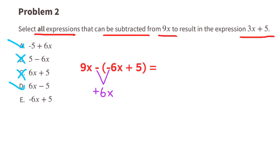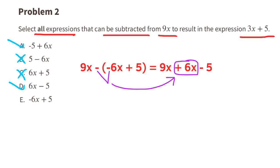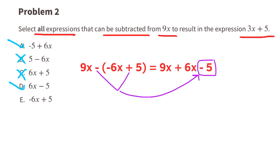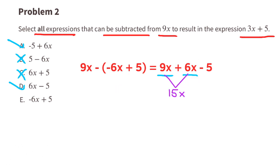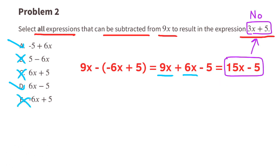Option E: a negative times a negative equals a positive, and a negative times a positive equals a negative. So the expression reads 9x plus 6x minus 5. Combining like terms, 9x plus 6x equals 15x, so the expression reads 15x minus 5. Since 15x minus 5 is not the same as 3x plus 5, this does not match the original expression.